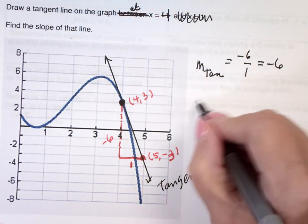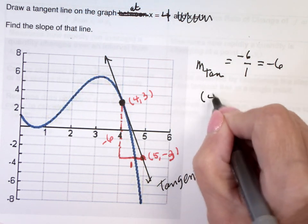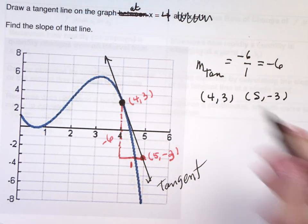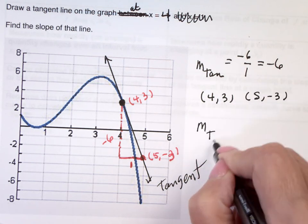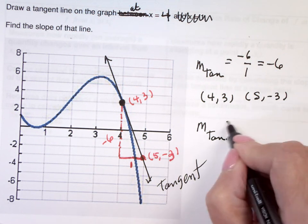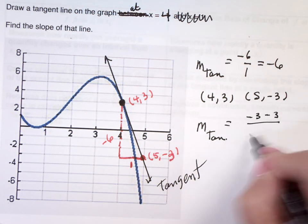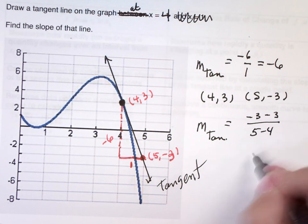So, I should get the same thing if I take two coordinate points. So, the slope of the tangent will be negative 3 minus 3, over 5 minus 4. Which is negative 6 over 1, or negative 6. Should get the same thing either way.